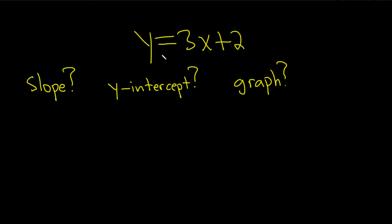Hi everyone. In this problem we have the equation of a line, a linear function, which is the same thing: y equals 3x plus 2. And there's three questions. We want the slope, the y-intercept, and then the graph.